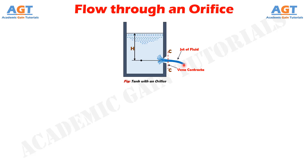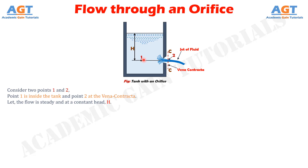Consider two points 1 and 2 as shown in this figure. Point 1 is inside the tank and point 2 is at the vena contracta. Let's consider the flow is steady and at a constant head H.